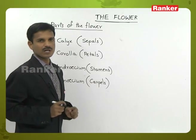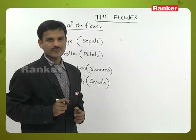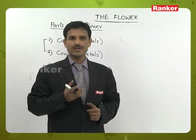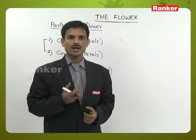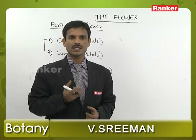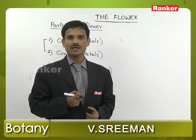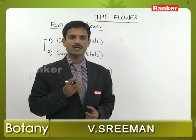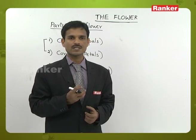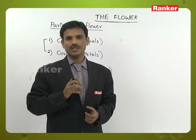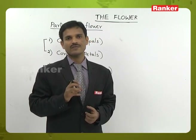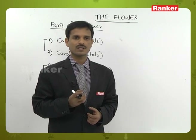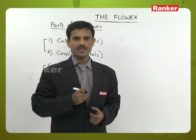The first part is calyx. Calyx is presented at the first node and is generally green in color. Calyx refers to the sepals, which protect the flower when it is in the bud stage. Sometimes they are also synthesizing food materials.